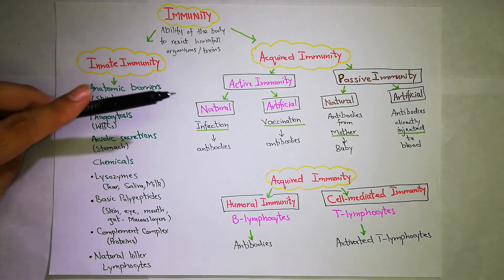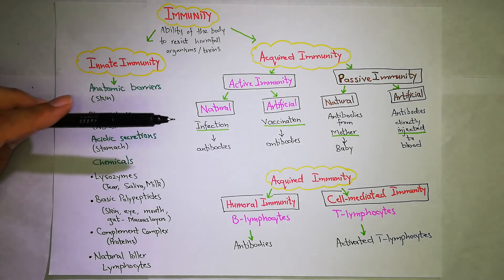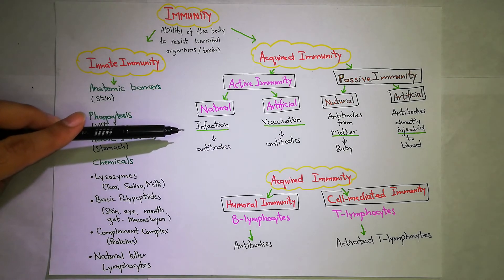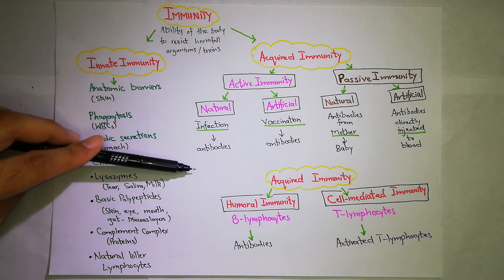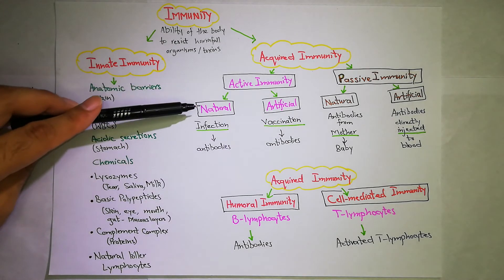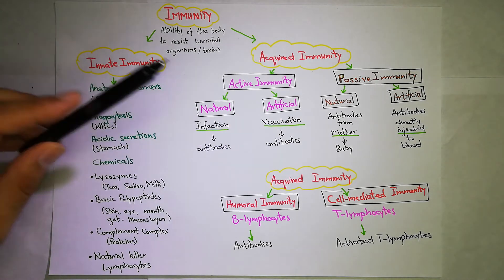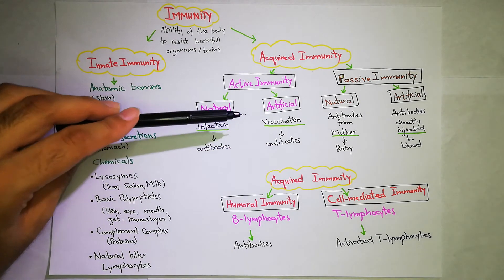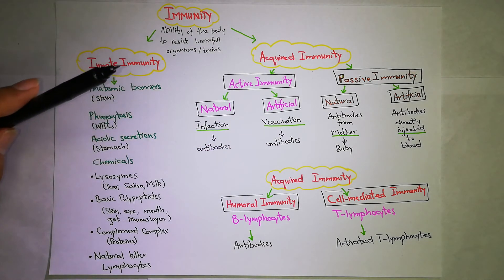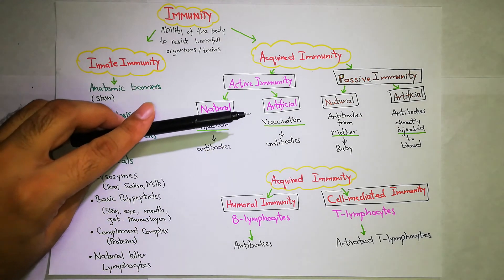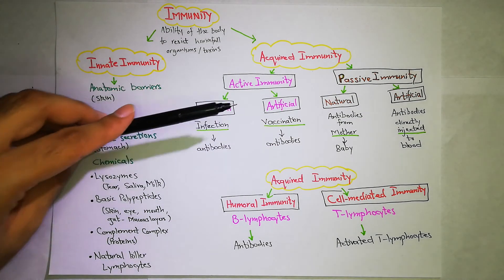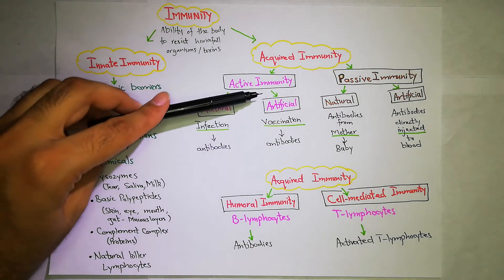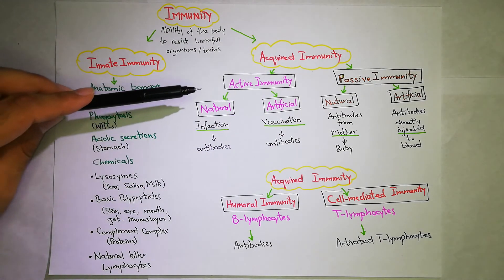Active immunity has two types: one where the stimulus is natural, and one where the stimulus is artificial. Natural stimulus means an infection comes to the body — this is natural active immunity. Artificial stimulus means vaccination — we have artificially injected something. In both cases the body produces antibodies. So active immunity has two types: natural and artificial.